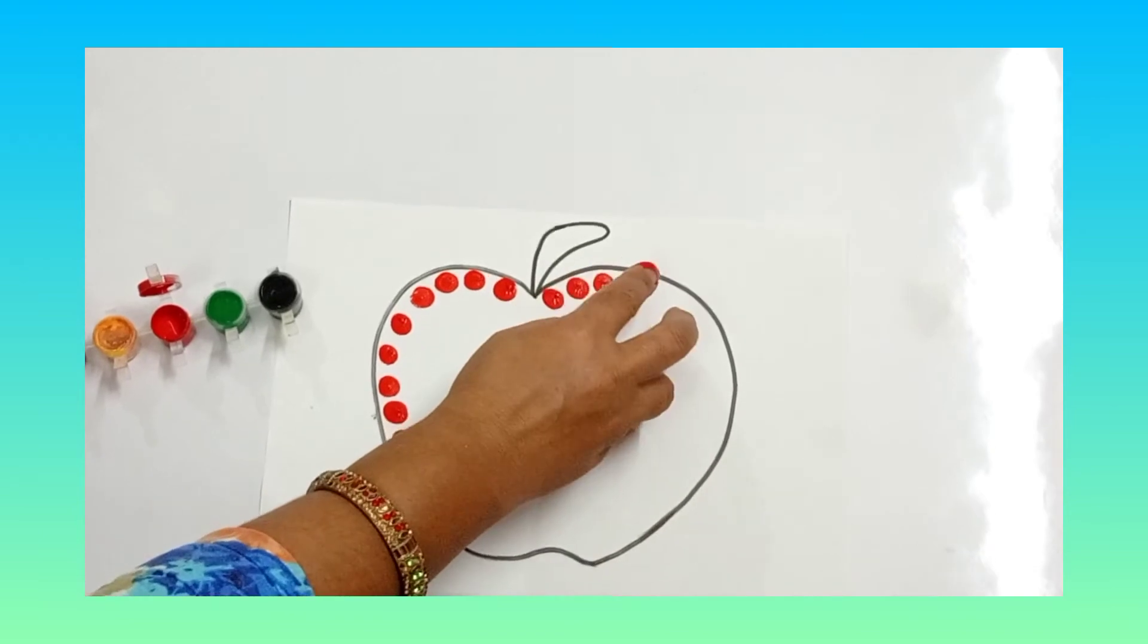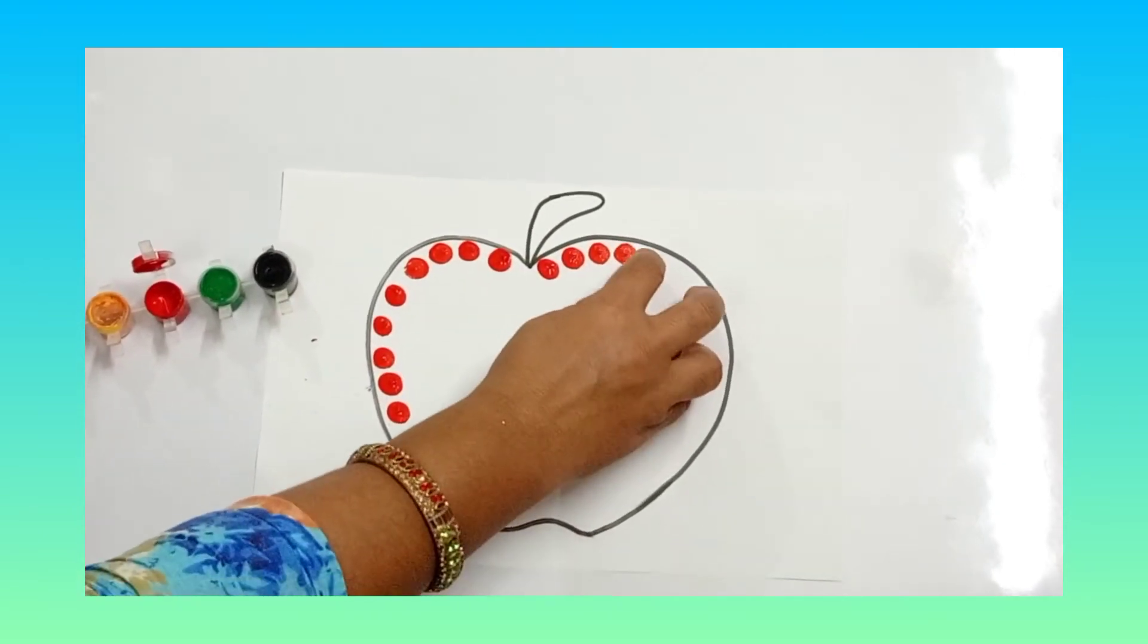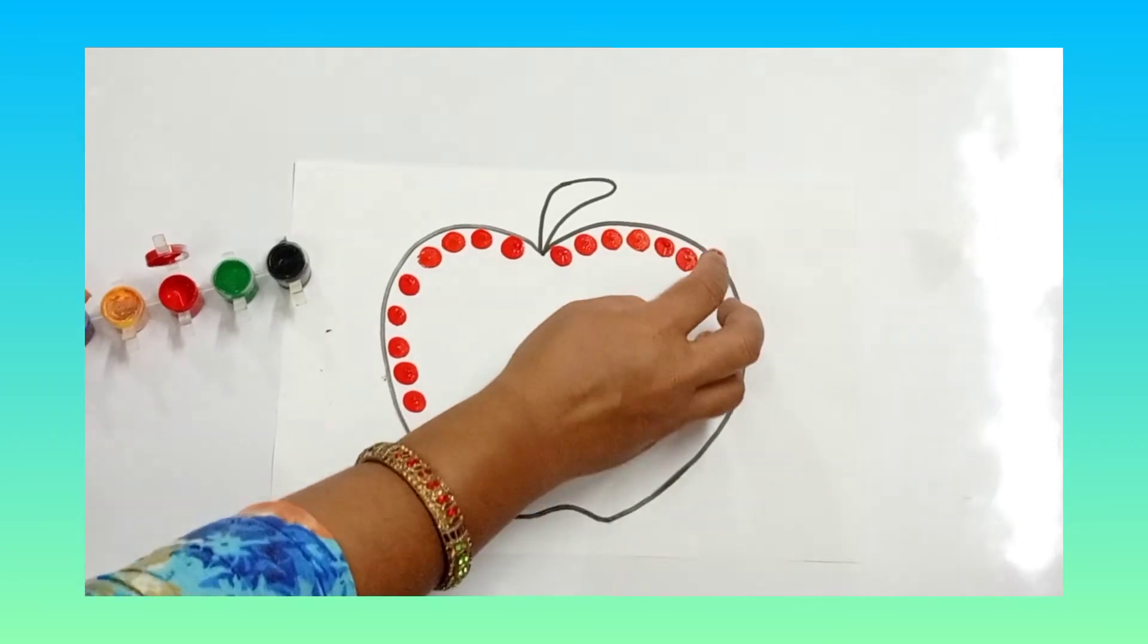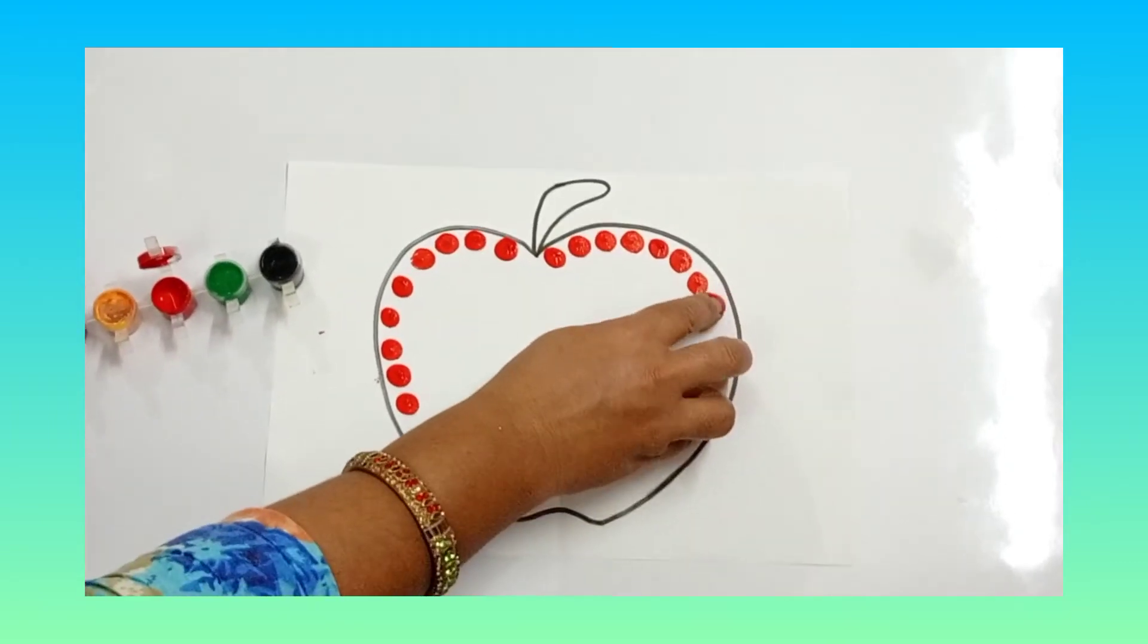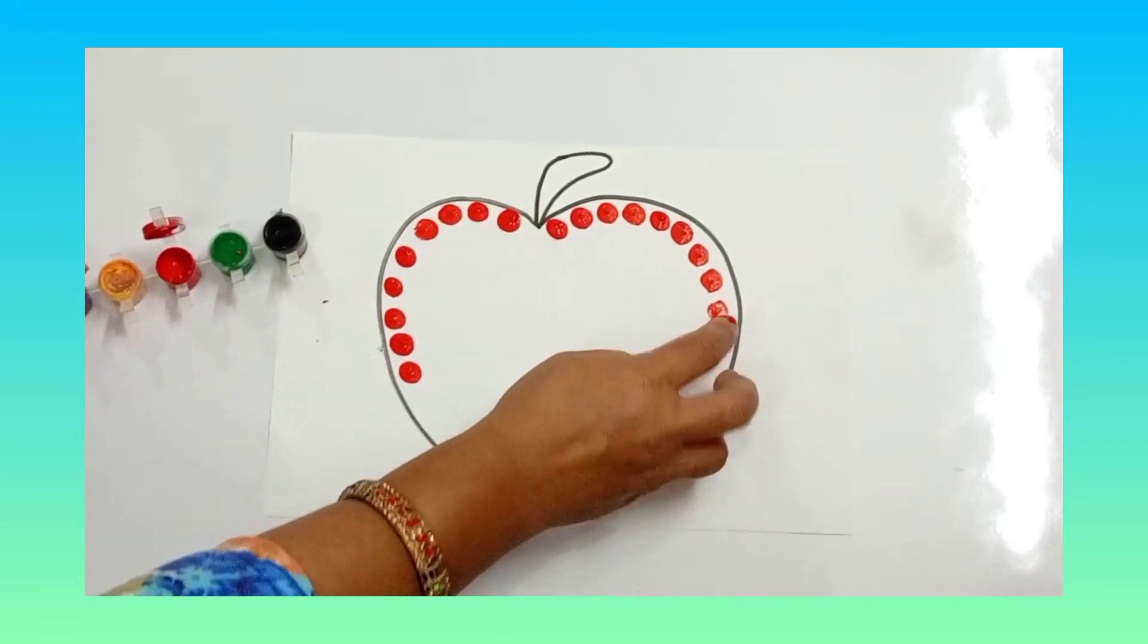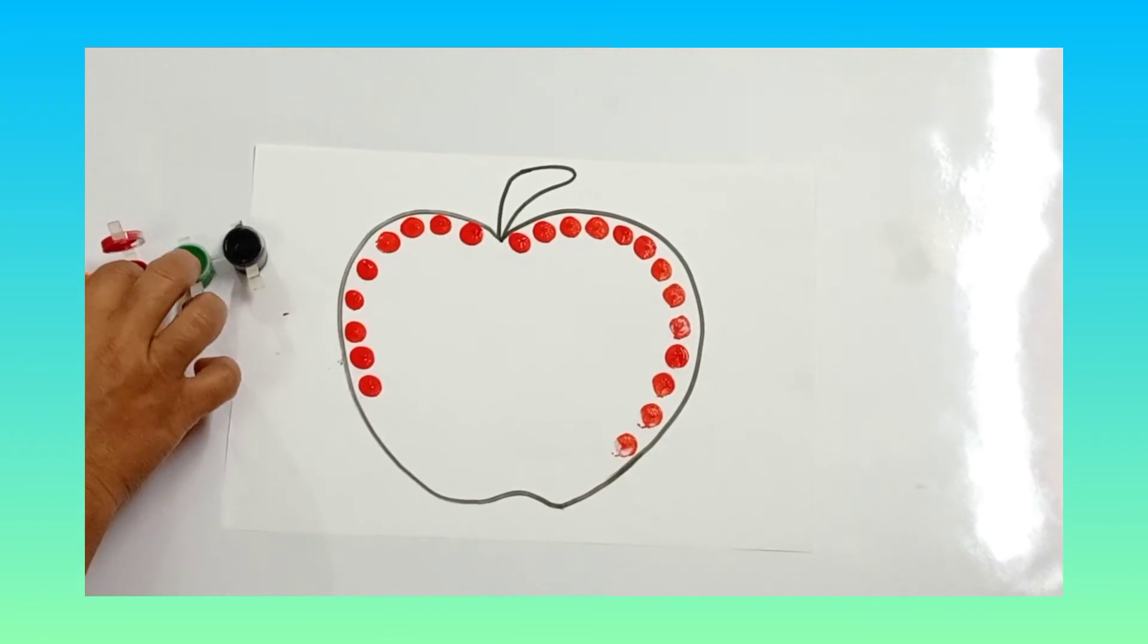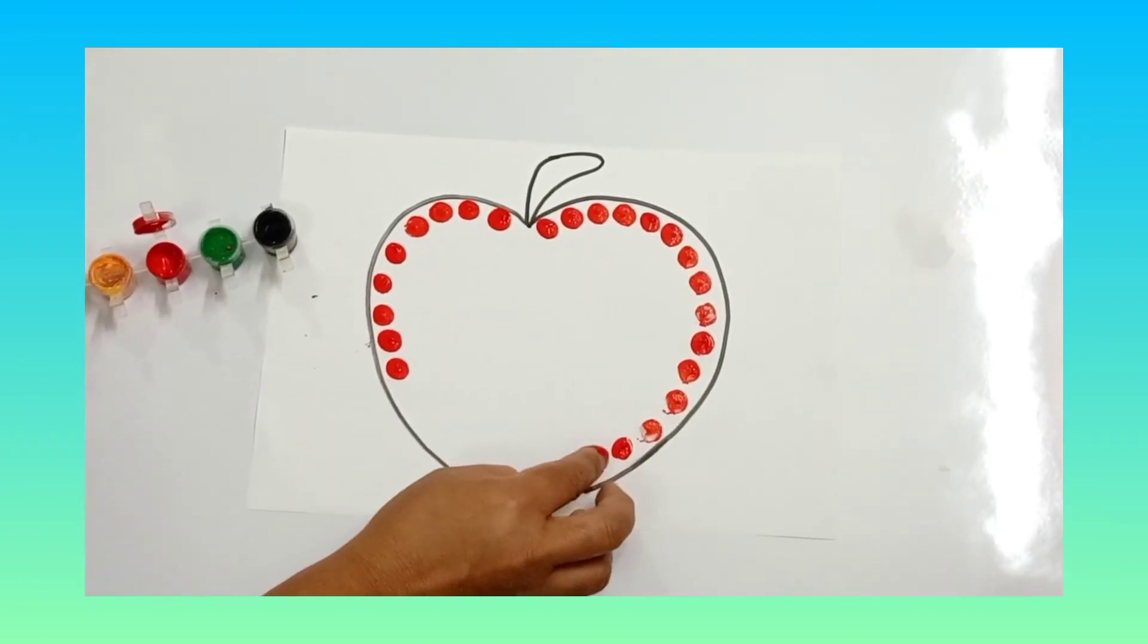Ish liye maim ne koon sa color liya hai? Red color. Bacho aapko pata hai apple or bhi colors mein hota hai. Apple green color mein bhi hota hai. So you can use your own imagination. And you will do finger printing in this apple.